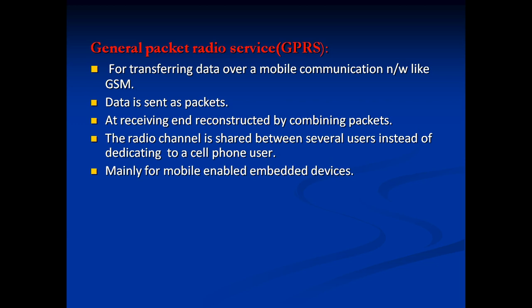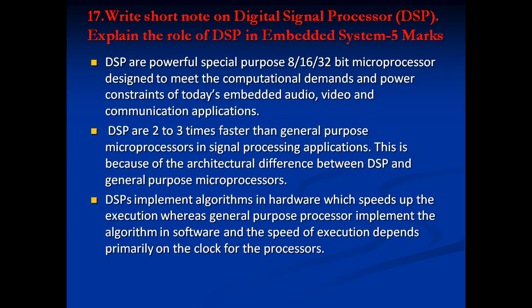GPRS — General Packet Radio Service — is used in mobile networks to transfer data over mobile communications. Data is sent in the form of packets and reconstructed at the receiving end by combining all packets. The radio channel is shared among several users instead of being dedicated to a particular user. It is mainly used for mobile-enabled embedded devices.